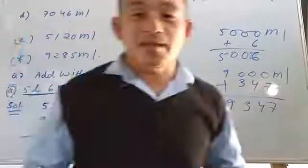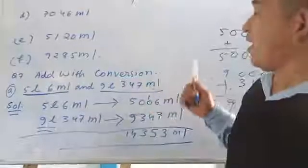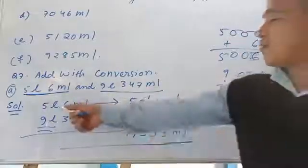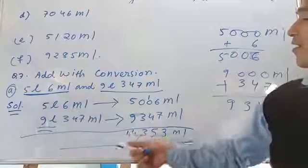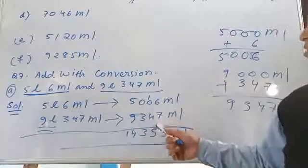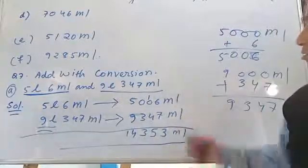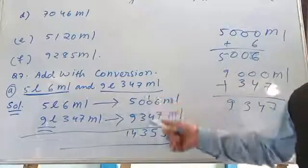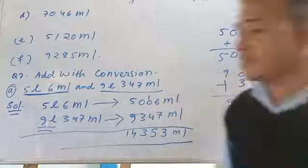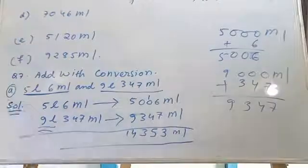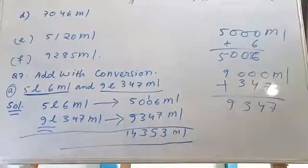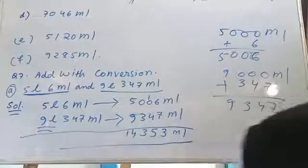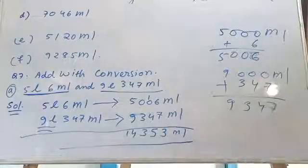Toh isi tariqa se aapko add karna hai — pehle change karna hai, pura milliliter mein change kar dena hai. Uske baad, when the conversion is done, you have to add — you have to find the sum of these two numbers. Isi tariqa se aapko karna chahiye jab bhi aapko add karna ho.